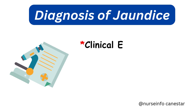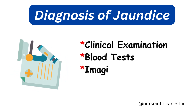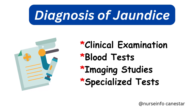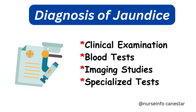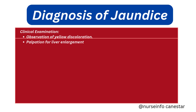Diagnosing jaundice involves a combination of clinical evaluation, laboratory tests, and imaging studies. A detailed medical history identifies risk factors like alcohol use or recent infections. Physical examination checks for signs like liver enlargement, tenderness, or fluid accumulation.